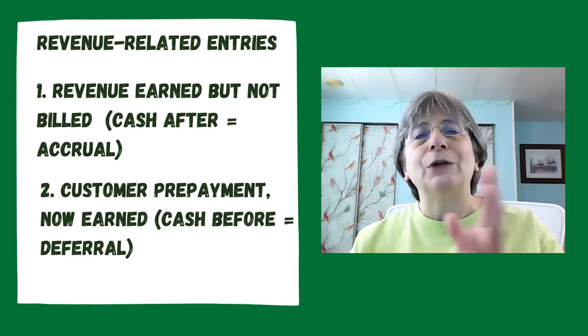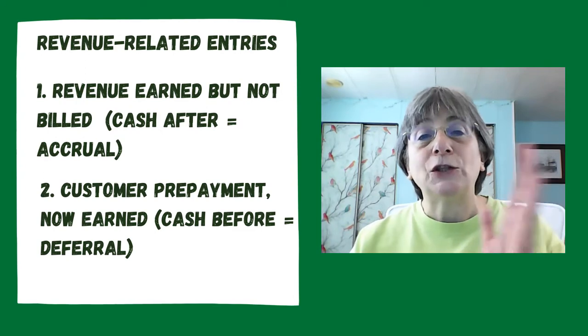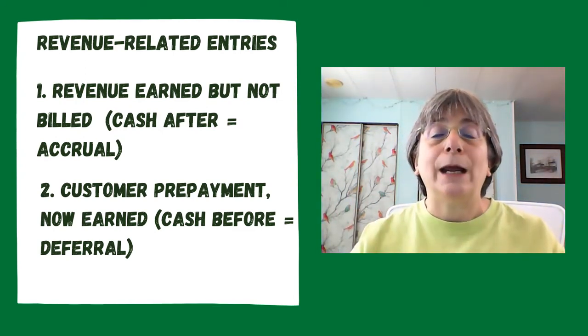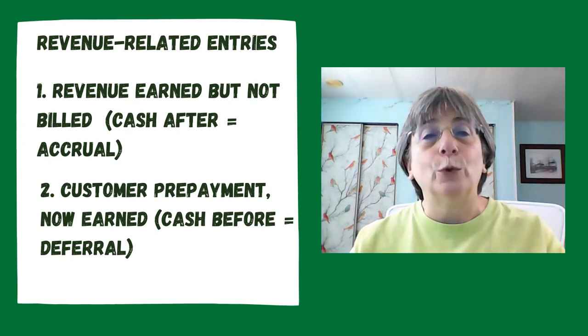When we're talking about adjusting entries, the first thing we need to determine is: is this a revenue-related entry or is it an expense-related entry? If it is revenue-related, things like unearned revenue and revenue, accounts receivable and some kind of revenue account — those are revenue-related entries. Once we've determined that, the next step is to decide whether it's an accrual or a deferral. An accrual means the cash comes after — you can remember that because 'cash after' starts with an A, and 'accrual' starts with an A.